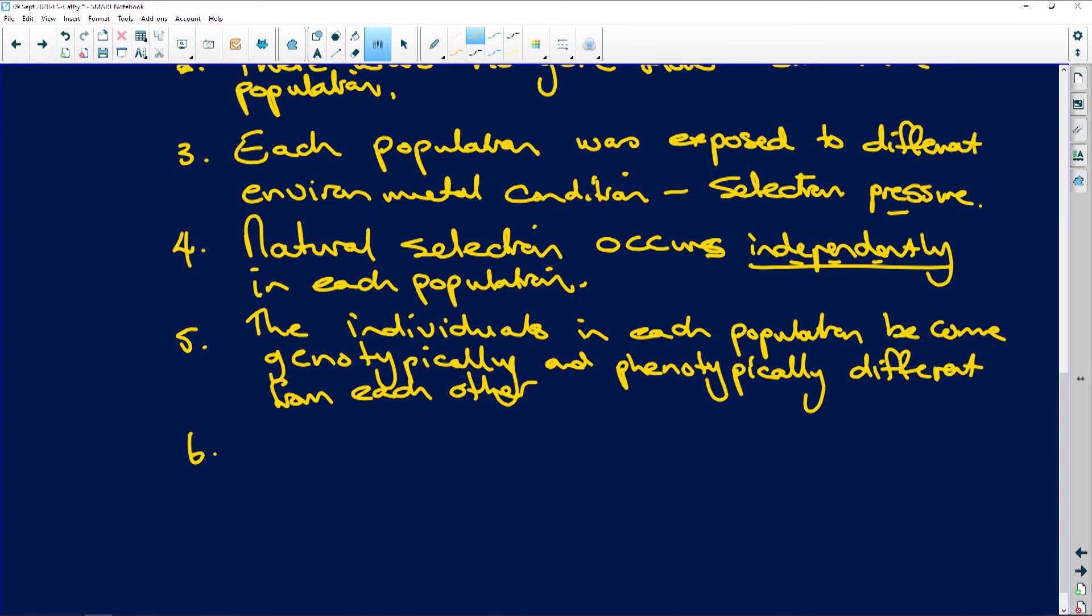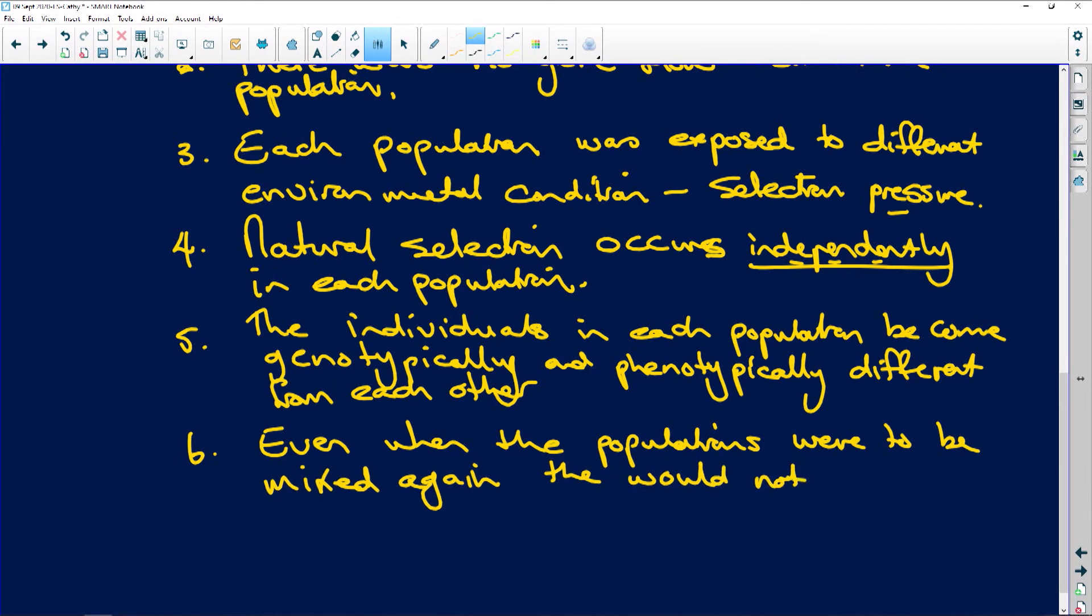And then point six, we say: Even when, or if, the populations were to be mixed again, they would not be able to interbreed - but don't stop there - and produce fertile offspring.